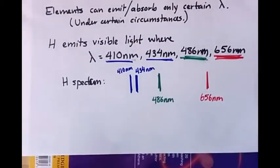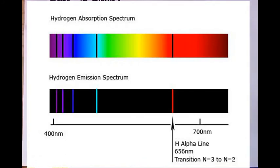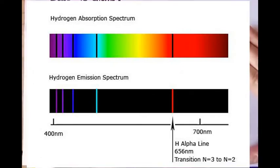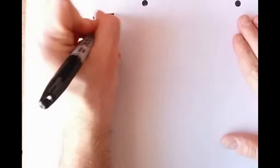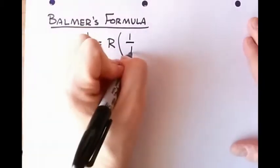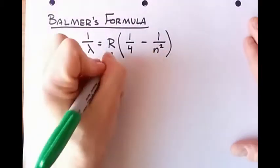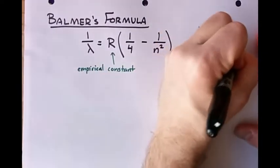If white light passes through hydrogen gas, only certain wavelengths will be absorbed by the hydrogen — and those wavelengths are the same as the ones it emits: 410 nanometers, 434 nanometers, 486 nanometers, and 656 nanometers. Balmer realized that the allowed wavelengths are given by the Balmer formula: 1 over lambda equals R times (1 over 4 minus 1 over n squared). No one understood why this formula worked, but it did.